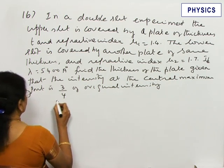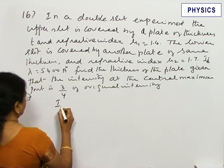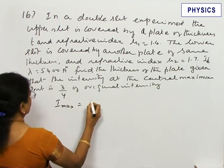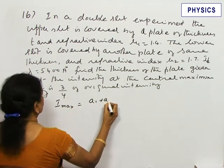Let us find out the intensity at the central maximum, I_max. It is equal to (a₁ + a₂)².